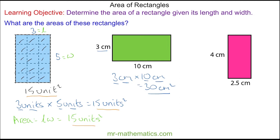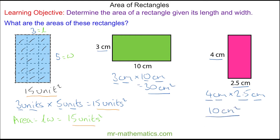3 times 10 is 30, and centimeters times centimeters is centimeters squared. Do you want to try and work out the area of the pink rectangle? You can pause the video and resume it when you're ready. So we're going to multiply 4 centimeters by 2.5 centimeters. 4 times 2.5 is 10, and centimeter times centimeter is centimeters squared.